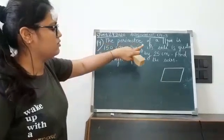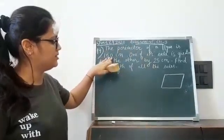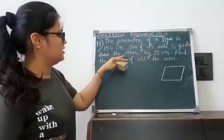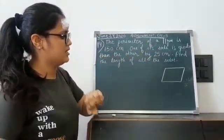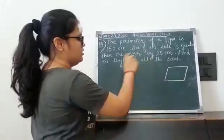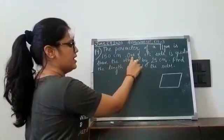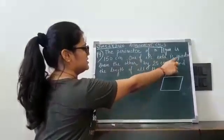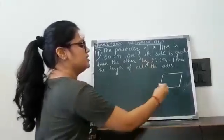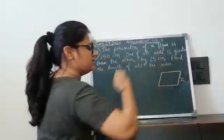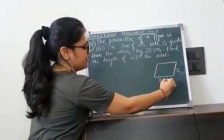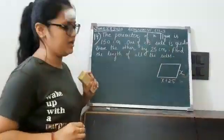The first question is: the perimeter of a parallelogram is 150 cm. One of its sides is greater than the other side by 25 cm. I have drawn a rough figure of the parallelogram where you can mark the sides. It is given that one side is greater than the other by 25 cm, so if I consider this side as x cm, then the other side will be x plus 25.